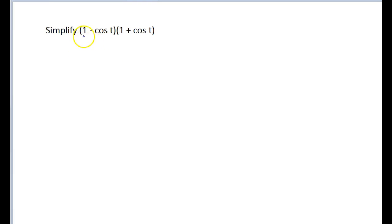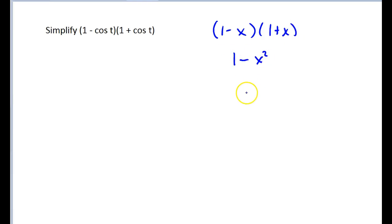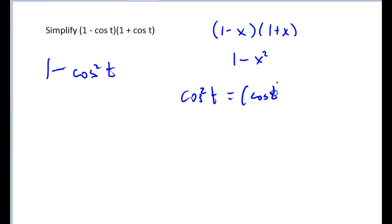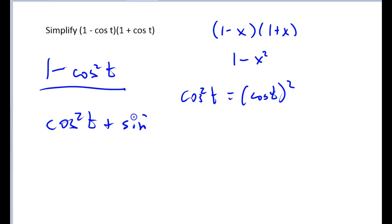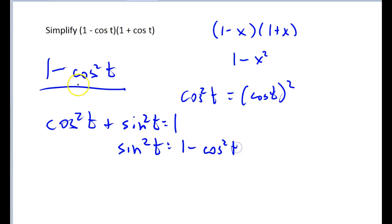Let's multiply 1 minus cosine of t times 1 plus cosine t. From algebra, 1 minus x times 1 plus x is the difference of two squares: 1 squared minus x squared. So this becomes 1 squared minus cosine squared of t, which is 1 minus cosine squared t. Using the Pythagorean identity cosine squared t plus sine squared t equals 1, if we subtract cosine squared from both sides we get sine squared t equals 1 minus cosine squared t. So our answer is sine squared t.